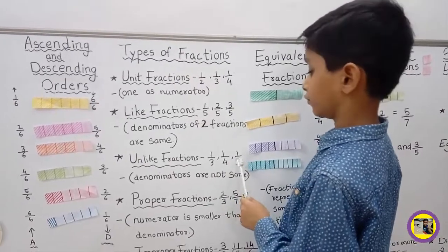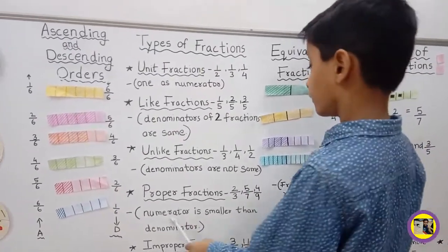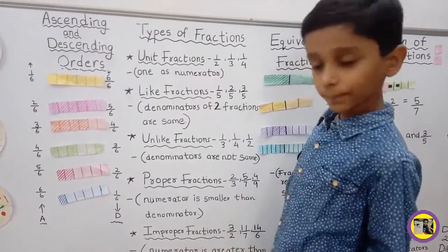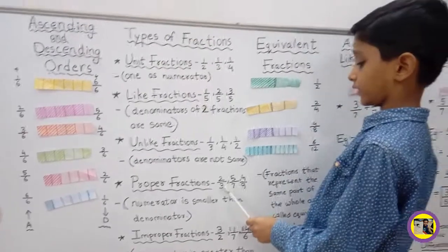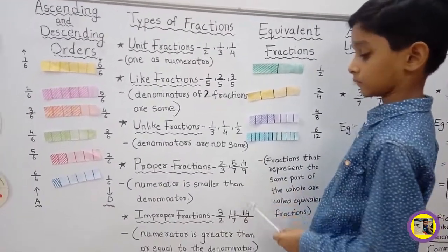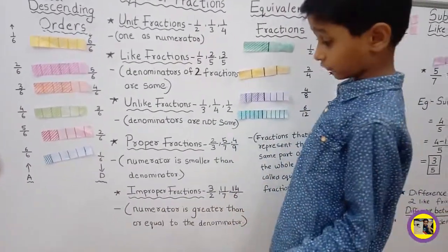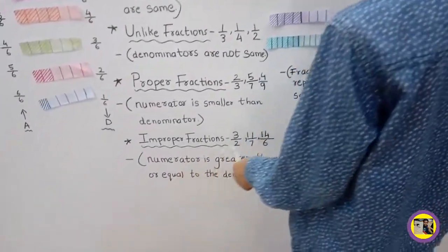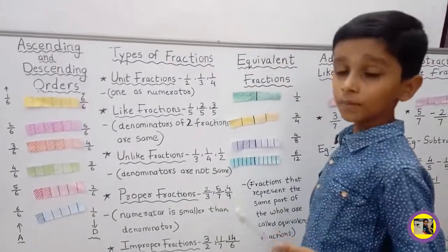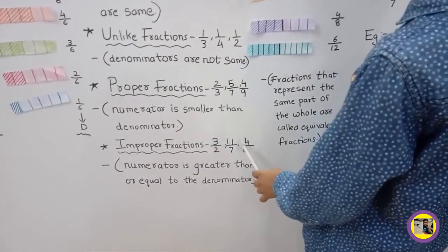Proper Fraction: In a proper fraction, the numerator is smaller than the denominator. For example, 2 upon 3, 5 upon 7, 4 upon 9. Improper Fraction: In an improper fraction, the numerator is greater than or equal to the denominator. For example, 3 upon 2, 11 upon 7, 14 upon 6.